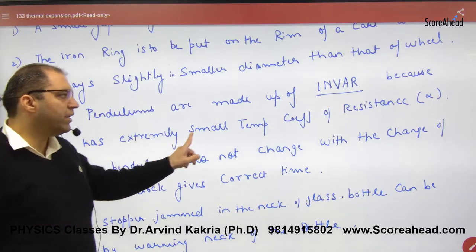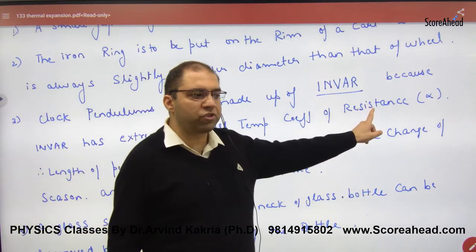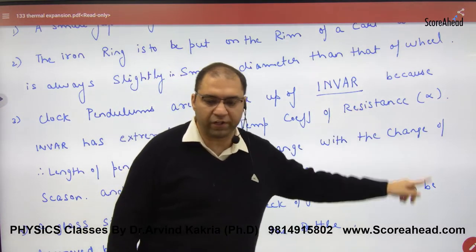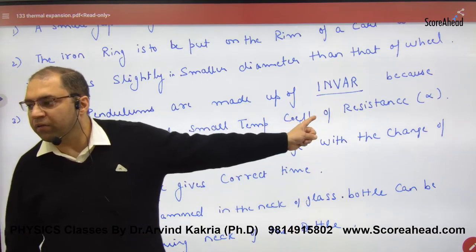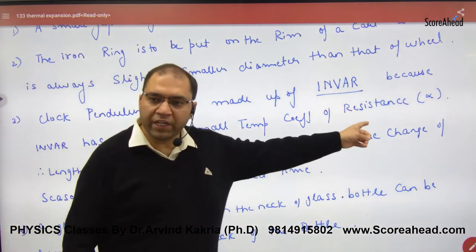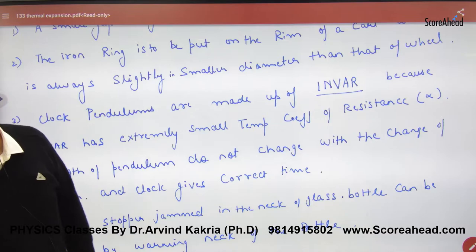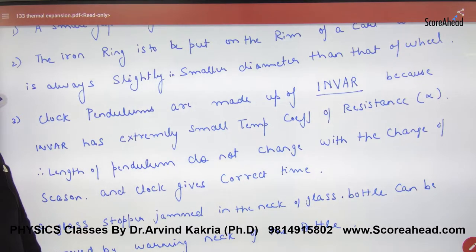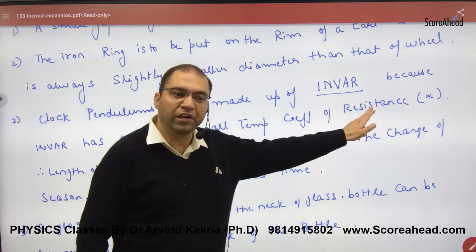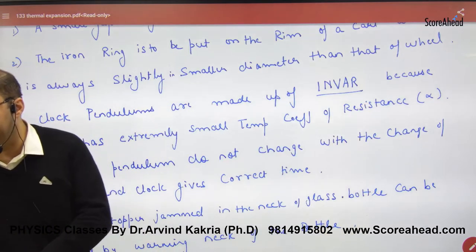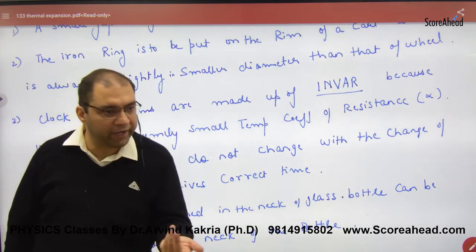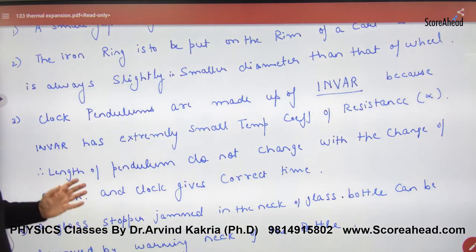What is Invar? Invar has an extremely small coefficient of linear expansion, alpha. Its coefficient of linear expansion alpha is very small, meaning temperature changes cause negligible expansion. So, as we can see, we can use this material for pendulum clocks to keep accurate time.